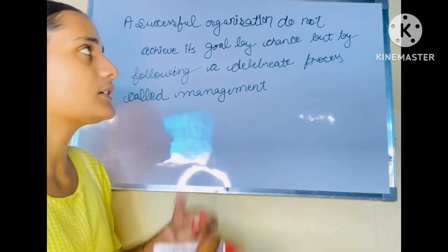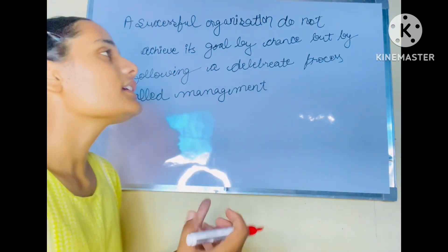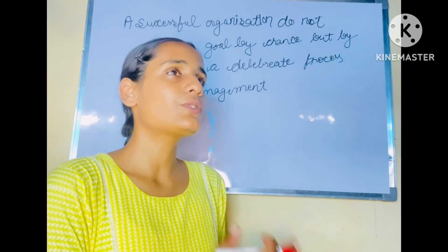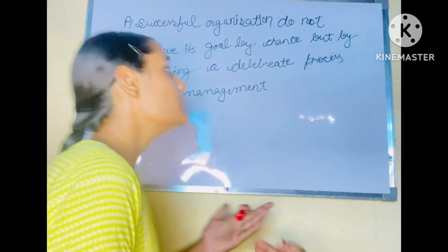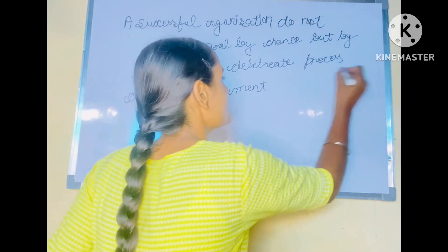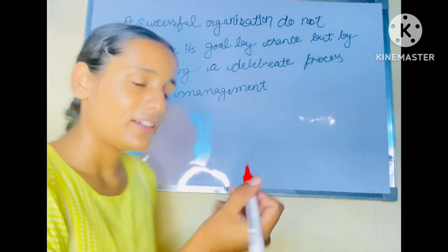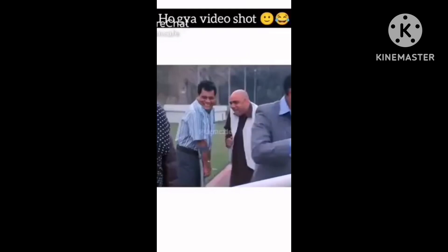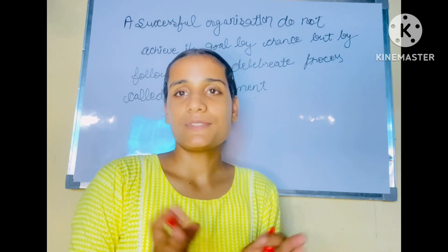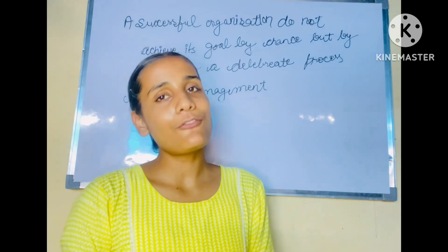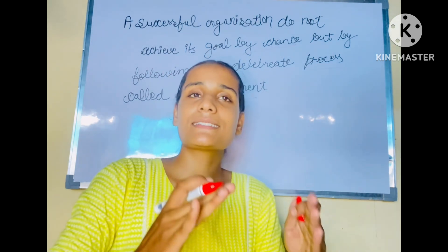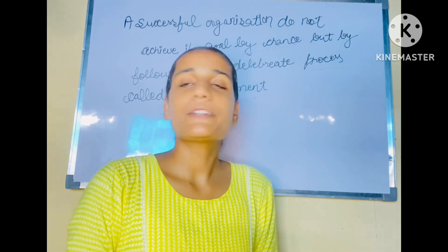So first, what is management? If you want to achieve any organization's goal, it is not by chance - it is a deliberate process. Management is what a manager does, and every business is totally dependent upon managers. Management plays a very important role in business. Let us discuss what are the different kinds of features related to management.